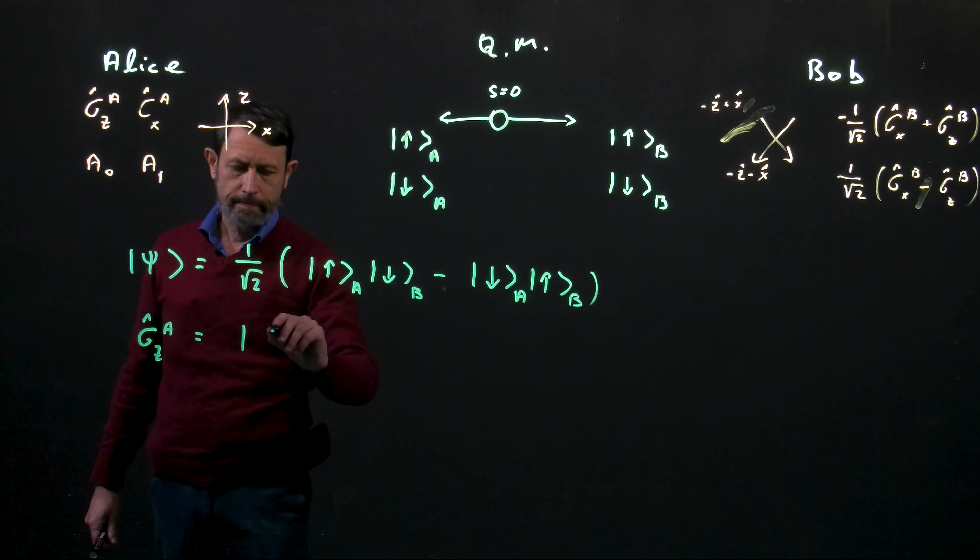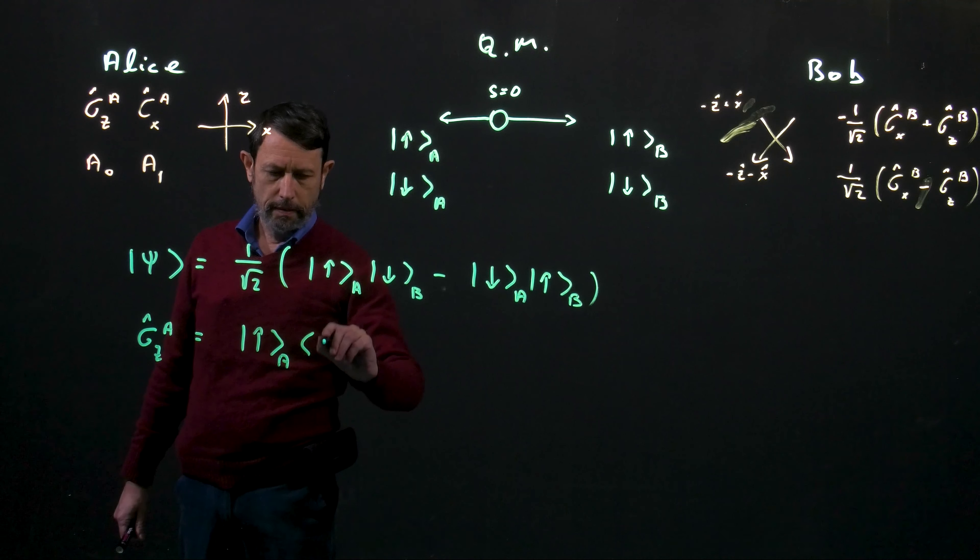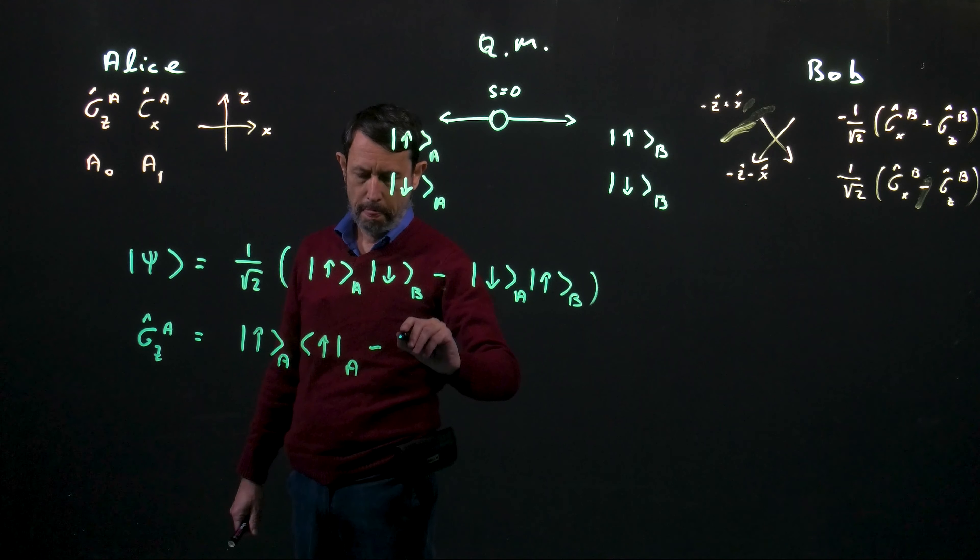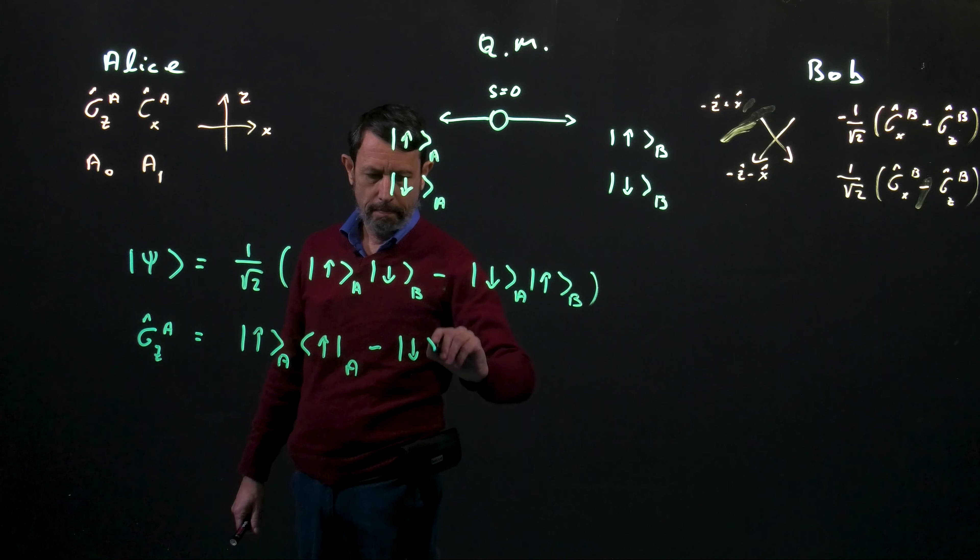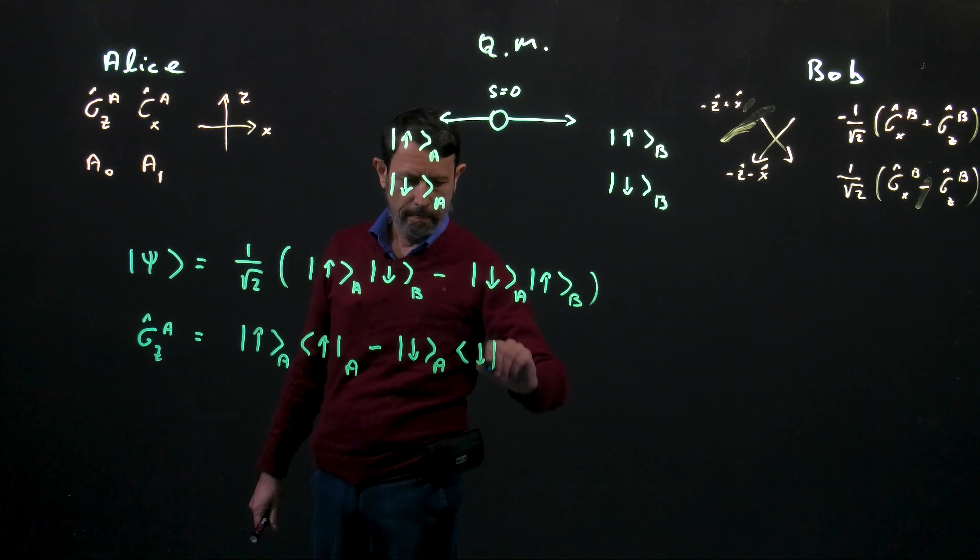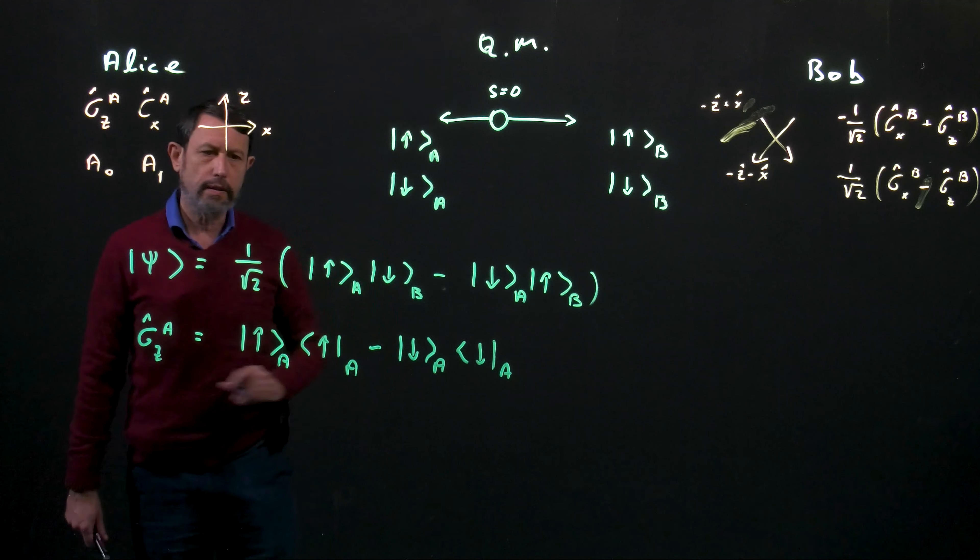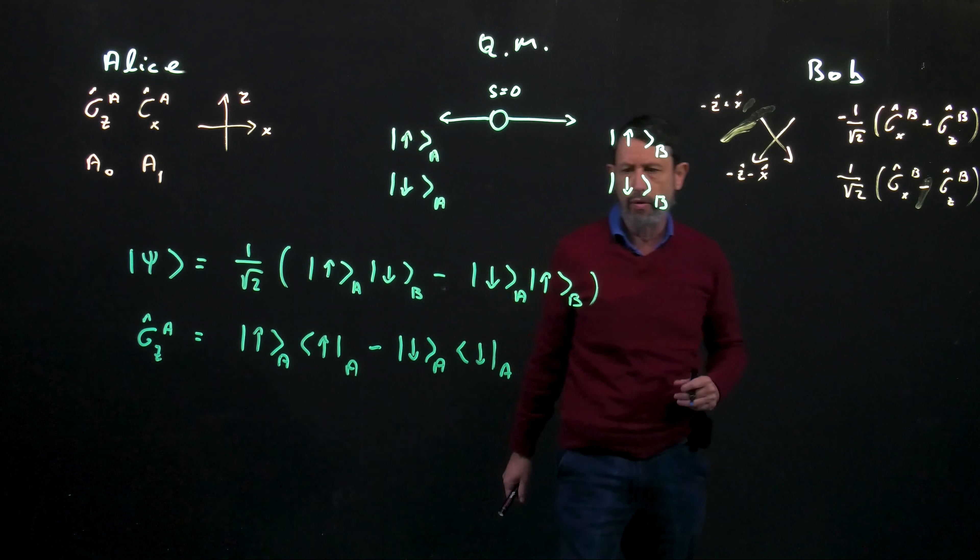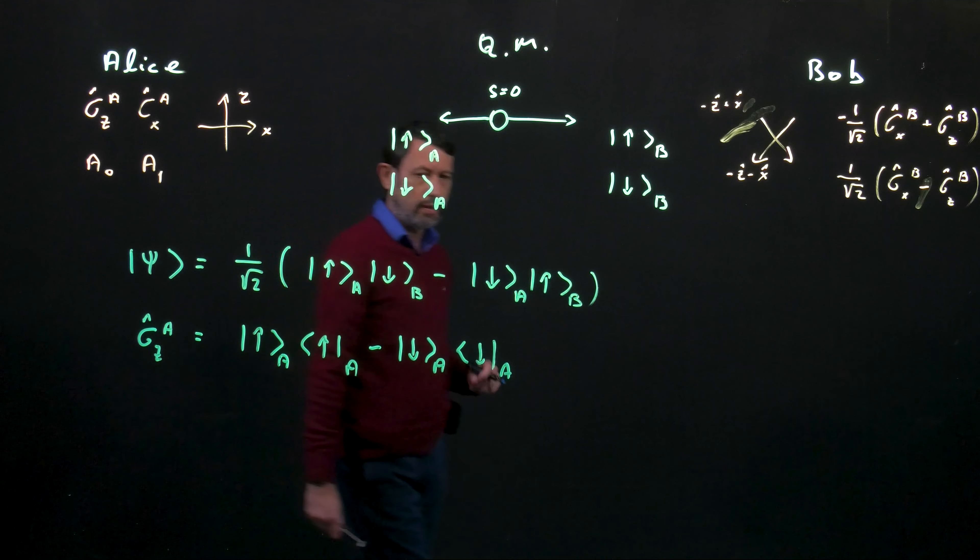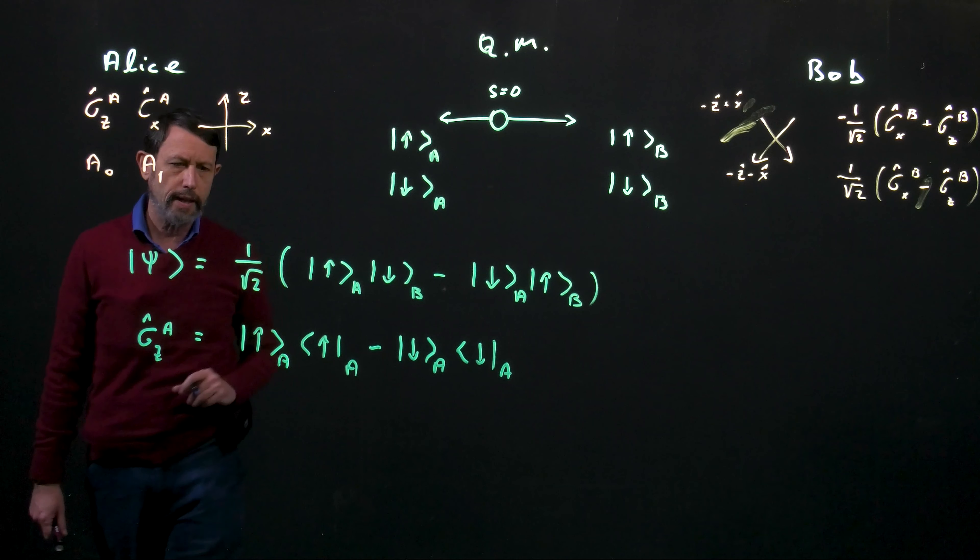And this is the operator. Alice's measure operator operates only on the particles that goes in her direction. Therefore you have here only wave functions corresponding to a. And this is an operator because if we multiply it by a vector we'll end up with a vector.